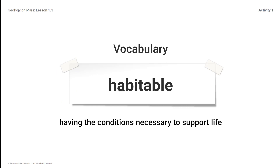Vocabulary: Habitable — having the conditions necessary to support life. When a place has the conditions necessary to support life, we say that place is habitable.